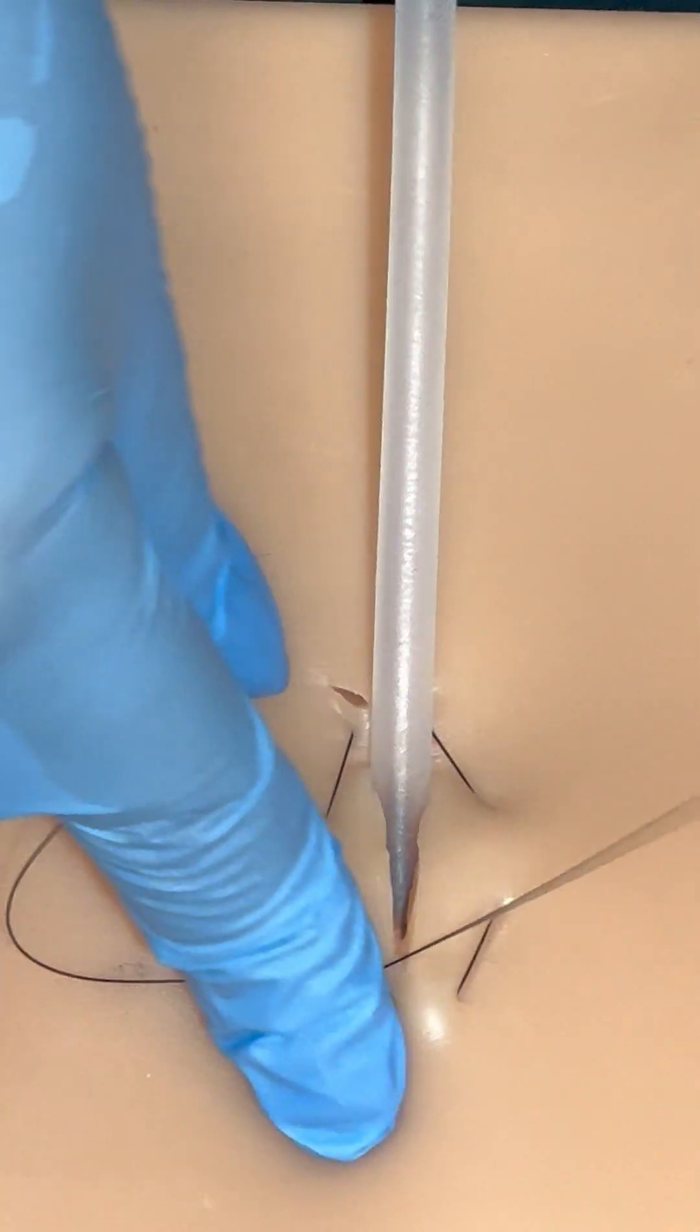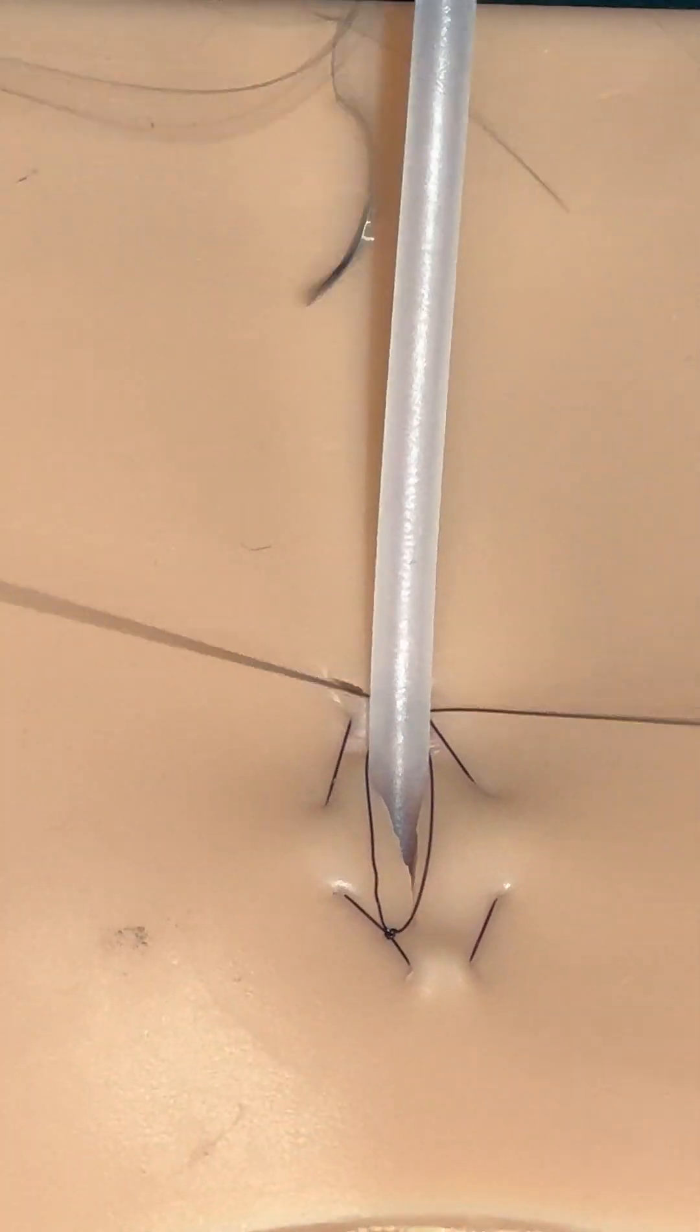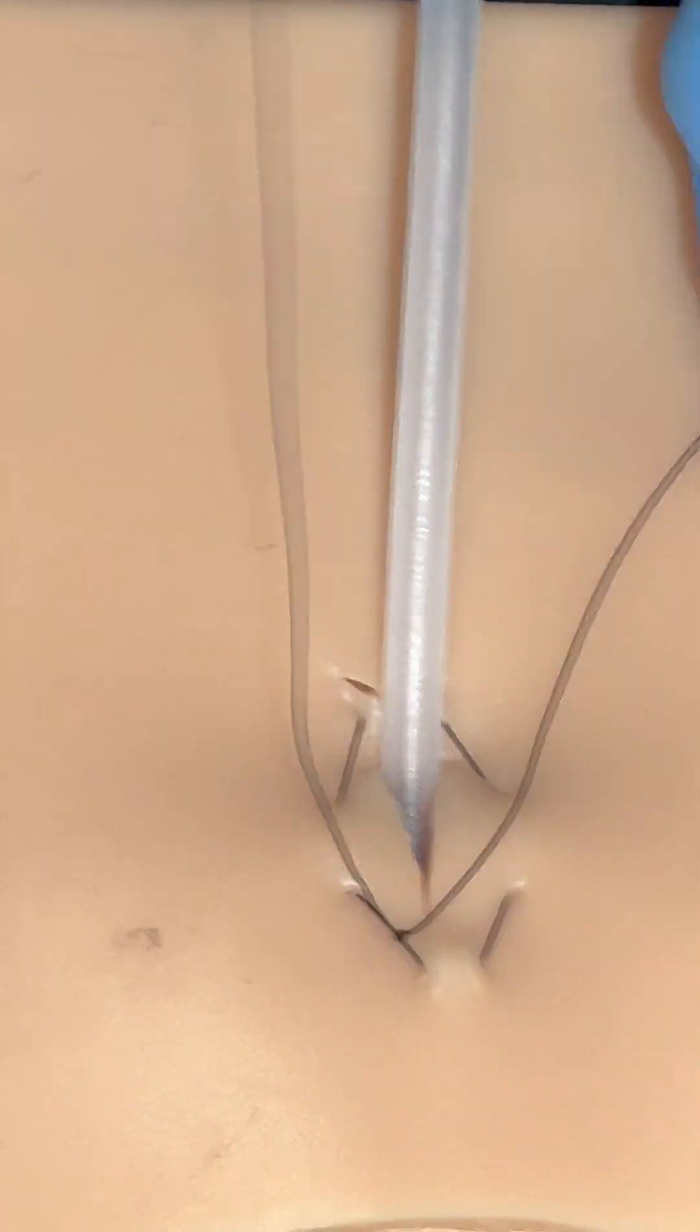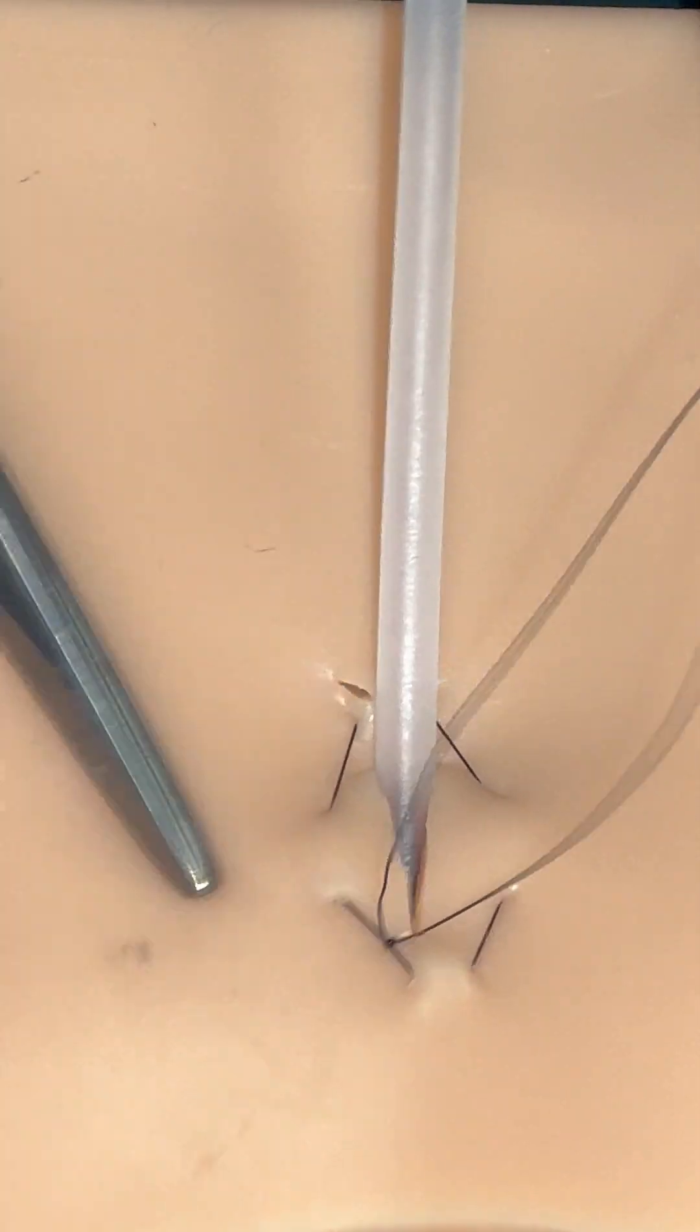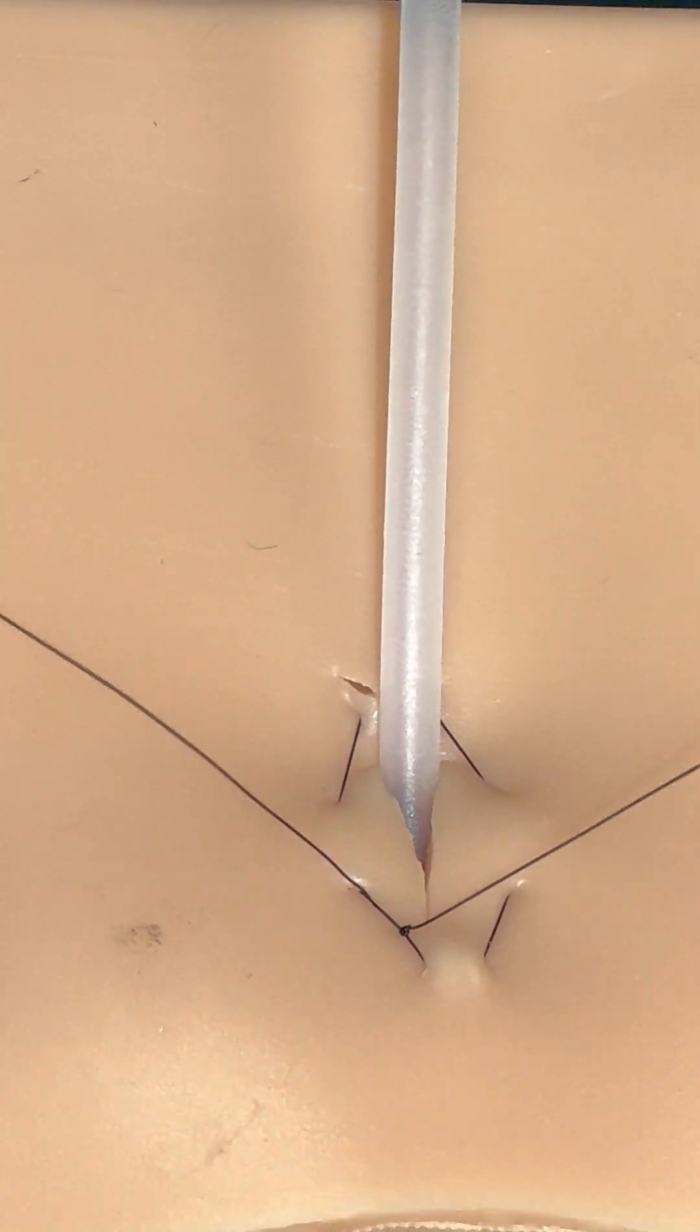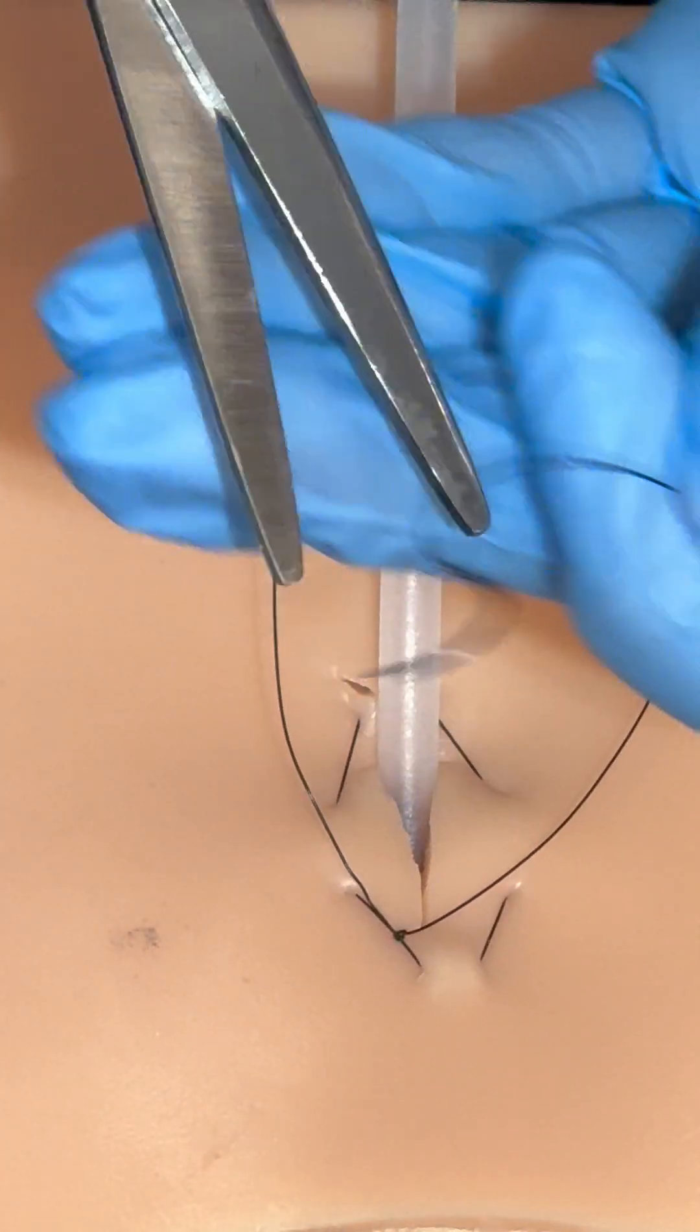So, from here, you can either make your purse string directly attached to a finger trap if you want. Sometimes, when I'm doing e-tubes in cats, I feel that their skin is very thin. So, alternatively, you could cut this and then make a separate bite to attach to your tube. You can do either way. I'm going to go ahead and just show you how I would turn this into now a finger trap. I'm going to cut off my needle.